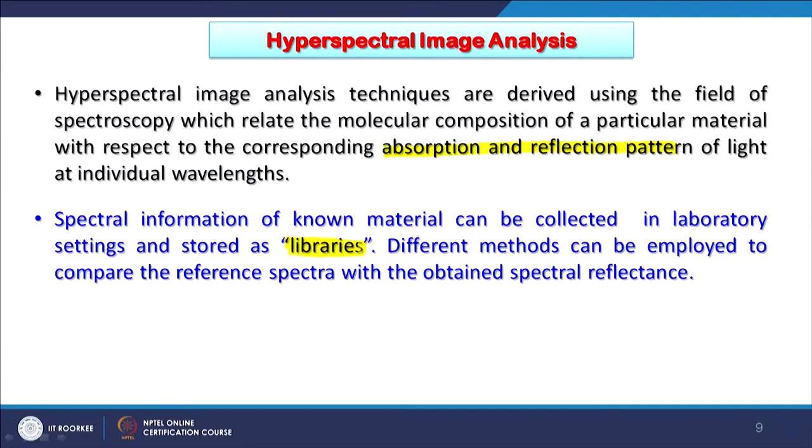Spectral libraries are being created about hyperspectral signatures of different minerals, soils, vegetation, vegetation conditions, water bodies, and atmospheric constituents. These libraries after certain iterations become standard libraries and therefore can be used to compare new datasets, making identification much easier.